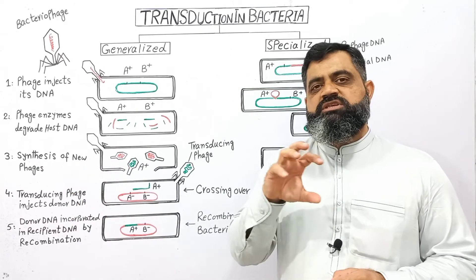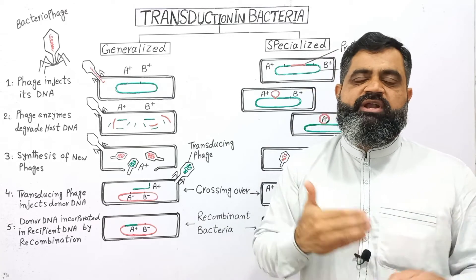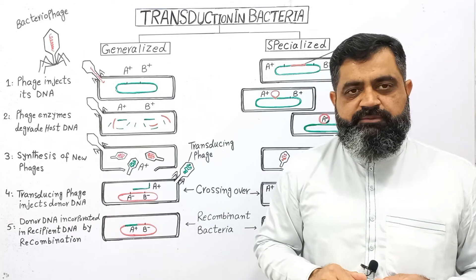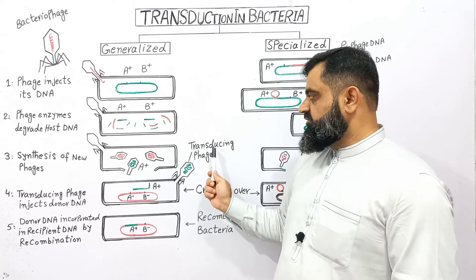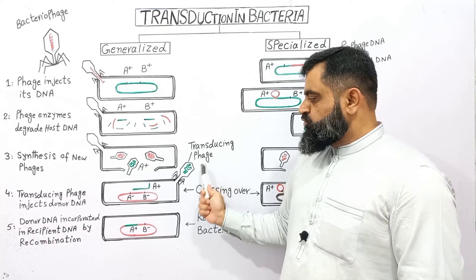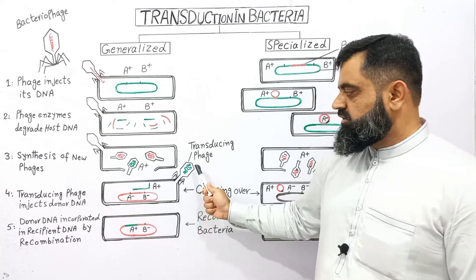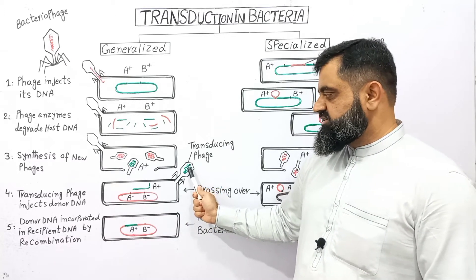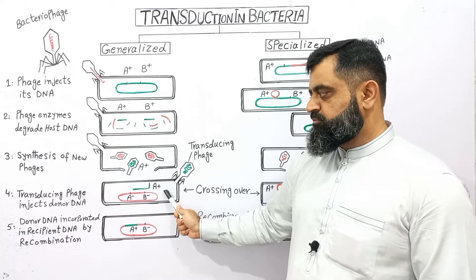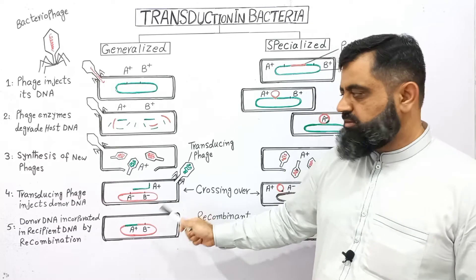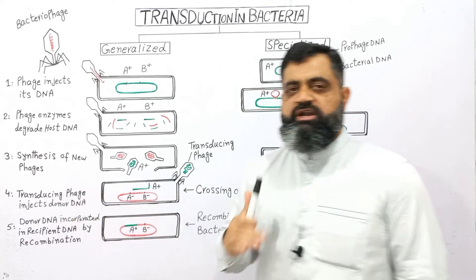These newly synthesized and released phages are going to attack another E. coli bacterium. The transducing phage attacks another bacterium and injects its DNA into the cell of that bacterium. This is the next step: the transducing phage injects donor DNA.